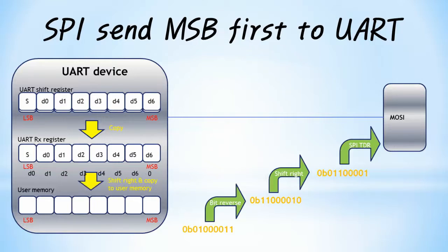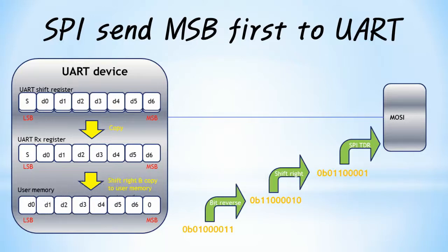When all 8 bits of data including the start bit are received, they are copied from the UART shift register to the receive data register. The user then reads the UART received data register that contains the start bit, shifts it right by 1 bit, discards the start bit, and copies only the pure data to user memory.